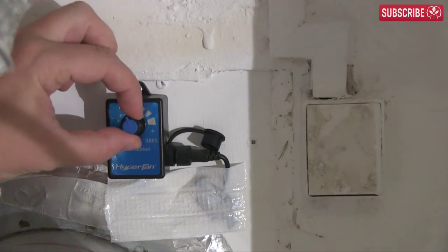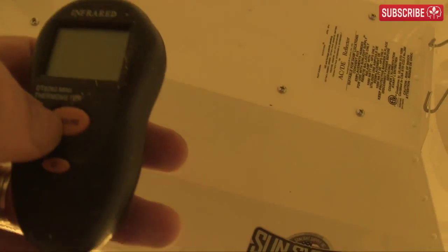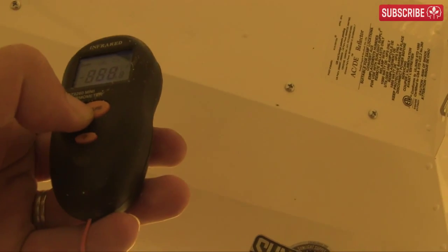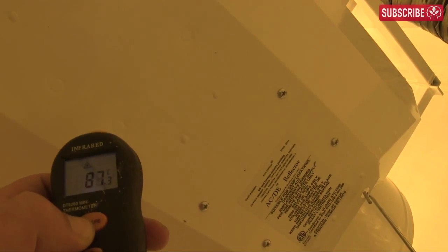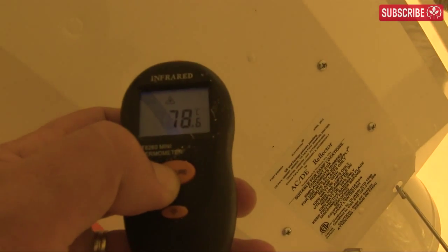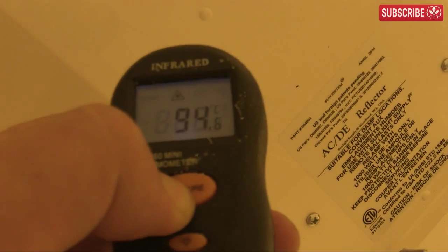When I run at the recommended 100% fan speed, the fixture was around 43 degrees Celsius, and that's around 109 degrees Fahrenheit, at the hottest point right above the lamp. With no air cooling, this quickly shot up to 96 degrees Celsius, or 204 degrees Fahrenheit.